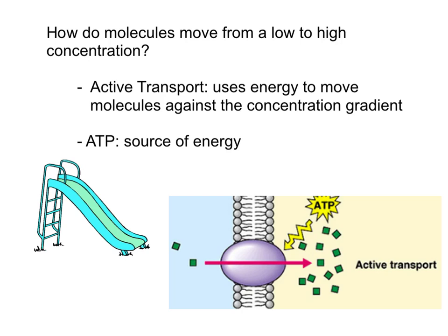Facilitated diffusion helps molecules that just don't fit through the membrane. But what about when we need to move molecules from a low to a high concentration? The way we do this is called active transport. If you think about it, if you're active, you have a lot of energy — and this is a process that uses energy to move molecules against the concentration gradient.